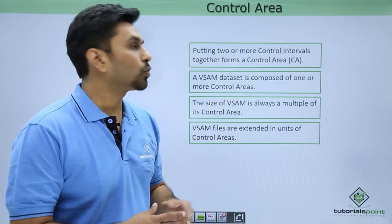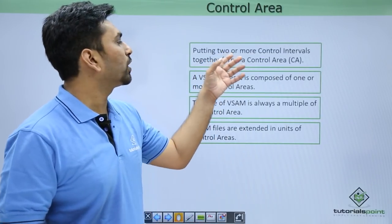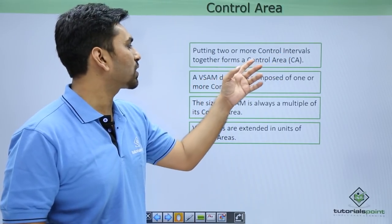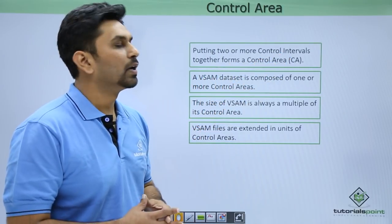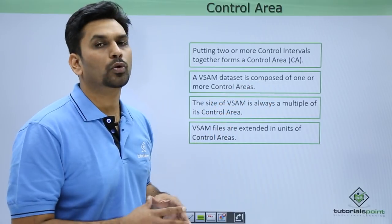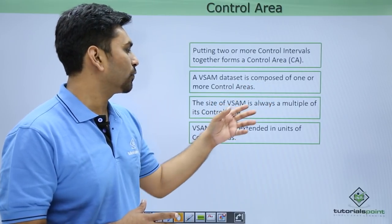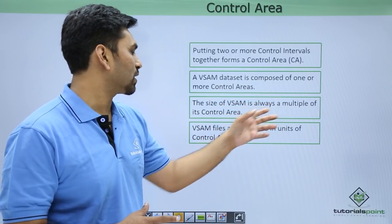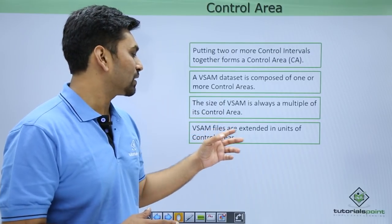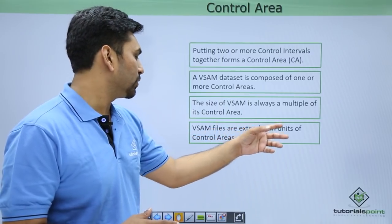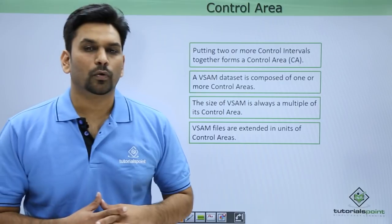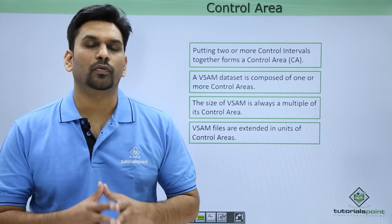Next we have the control area. Putting two or more control intervals together forms a control area. A VSAM data set is composed of one or more control areas, and the size of a VSAM data set is always a multiple of its control area. VSAM files are extended in units of control areas. In the next video we will learn how to define a cluster.